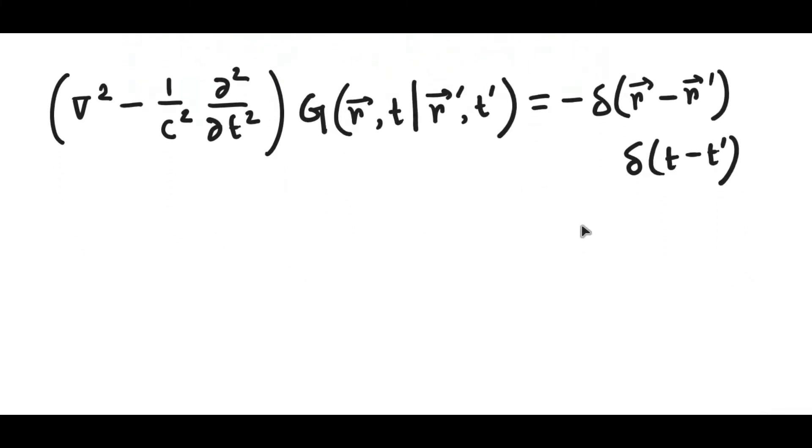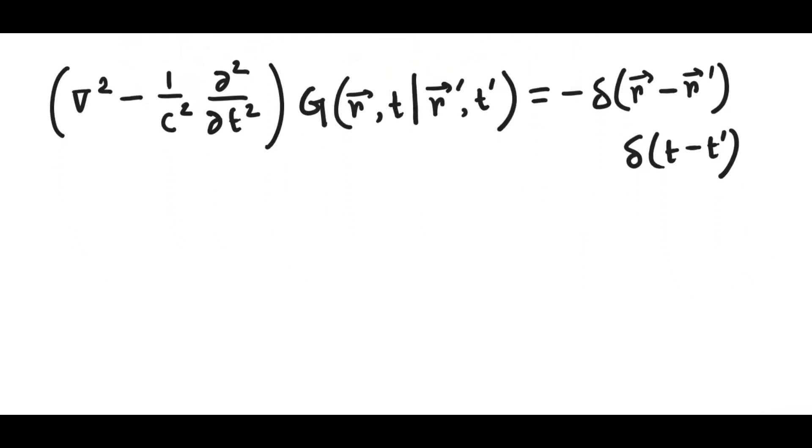So what do we do? The first thing we should do is to notice a simplification. How can we simplify this? Well, if we look at the source, then the dependence or rather the relationship of R and R' is through this special form where we have R minus R' and the same thing goes for T and T', and they appear only in this specific combination. So from this observation, we can assume that our Green's function has the arguments in that form as well.